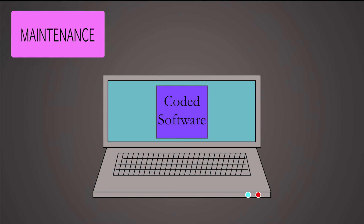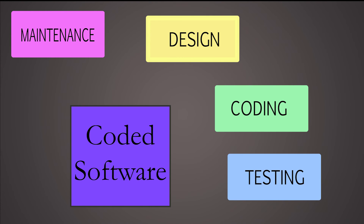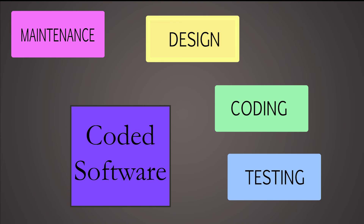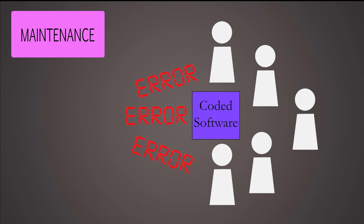Even after all these steps to make sure the software product is the best it possibly could be, some more problems could emerge after exposure to its users' community. This phase also includes changes due to evolving requirements.